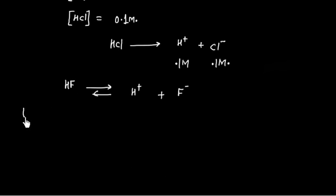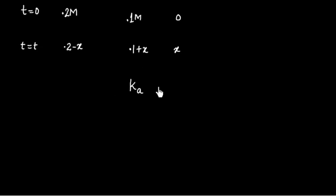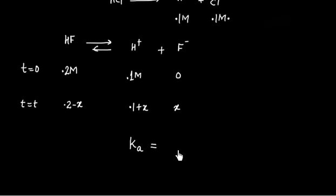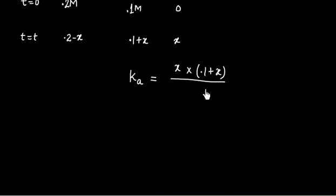The initial concentration of HF is 0.2 M at time T equals zero. The H⁺ initially present is 0.1 M, coming from HCl, and F⁻ is zero. At equilibrium, some HF will dissociate, so we have 0.2 minus X for HF, 0.1 plus X for H⁺, and X for F⁻. We can write the expression for the equilibrium constant: Ka equals concentration of F⁻ times concentration of H⁺ divided by concentration of HF, which is 0.2 minus X.